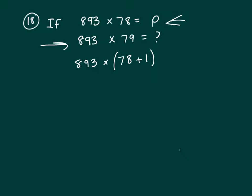So now let's distribute this 893. That's 893 times 78, plus 893.